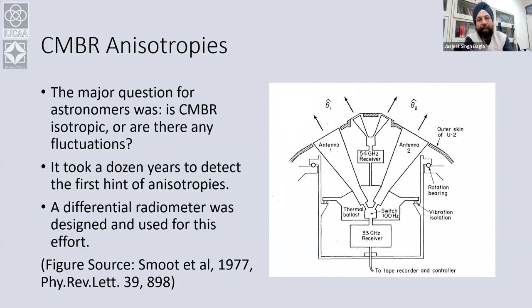Once the discovery was made and announced in 1965, the immediate question astronomers raised was: how can it be so isotropic? Because if it is absolutely isotropic, there should be no structures in the universe — so there must be some anisotropy, and people wanted to detect it. Nothing was detected for almost a dozen years. The first detection was announced by George Smoot and company in 1977. They designed a differential radiometer; there are two sets of antennas at two different frequencies: 54 gigahertz and 33 gigahertz.